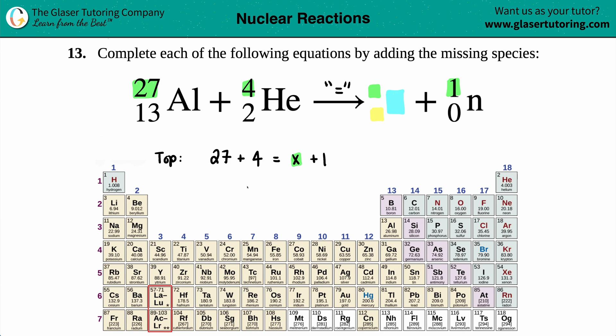27 plus 4, what is that? 31. X plus 1, solve for x. We're going to minus 1 from both sides, and x equals 30. So we know that the top number has to be a 30.